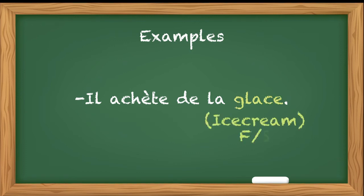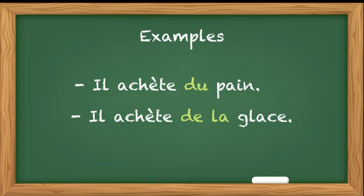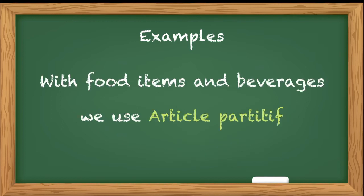Il achète de la glace - he buys some ice cream. Glace is ice cream and glace in French is feminine, so we have chosen the feminine form of partitive article. This partitive article, as you can see in these two examples, will be translated as some in English. These basically refer to some quantity.